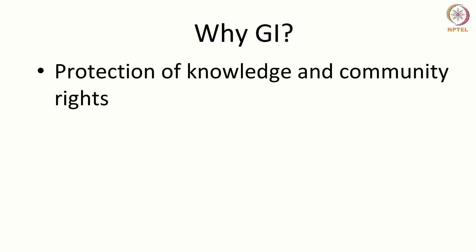Why do we need GI? It is to protect knowledge and community rights, so that there can be fair competition. For instance, Darjeeling tea should only be sold as Darjeeling tea. We do not want it to be sold as Assam tea or any other tea, because that would allow people who do not come from a particular territory to pass off a product as another one, affecting fair competition.